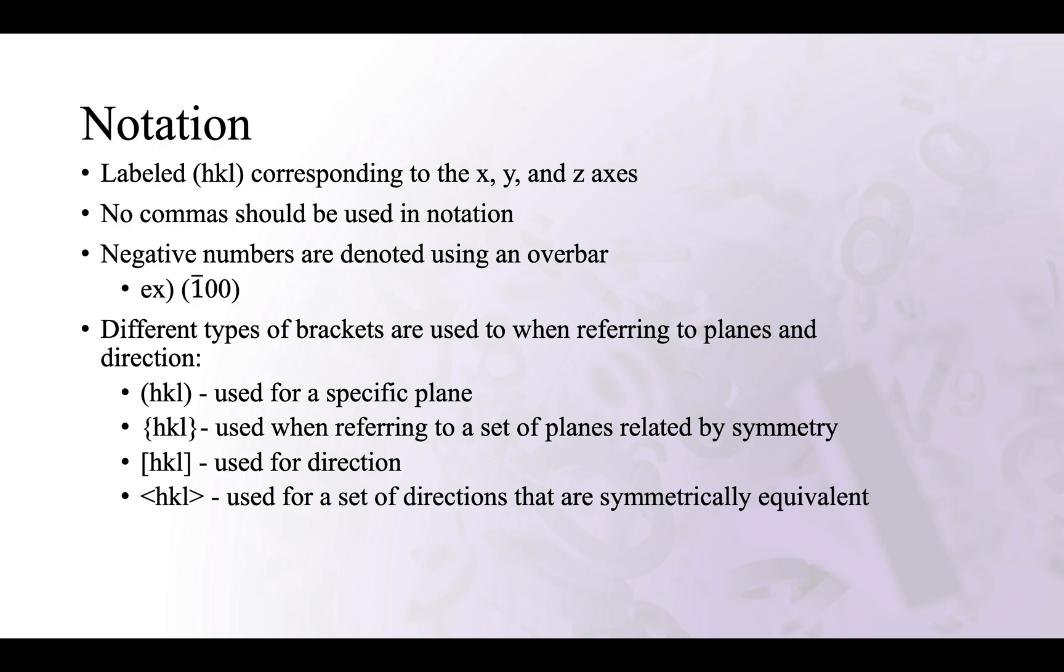So when referring to planes and directions, there are different types of brackets that are used. For a specific plane, parentheses would be used, and this is what I will be focusing on today. But for a set of planes related by symmetry, curly brackets are used. Square brackets are used for direction, and for a set of directions that are symmetrically equivalent, angle brackets are used. All of these are written with the same notation, except for the brackets.